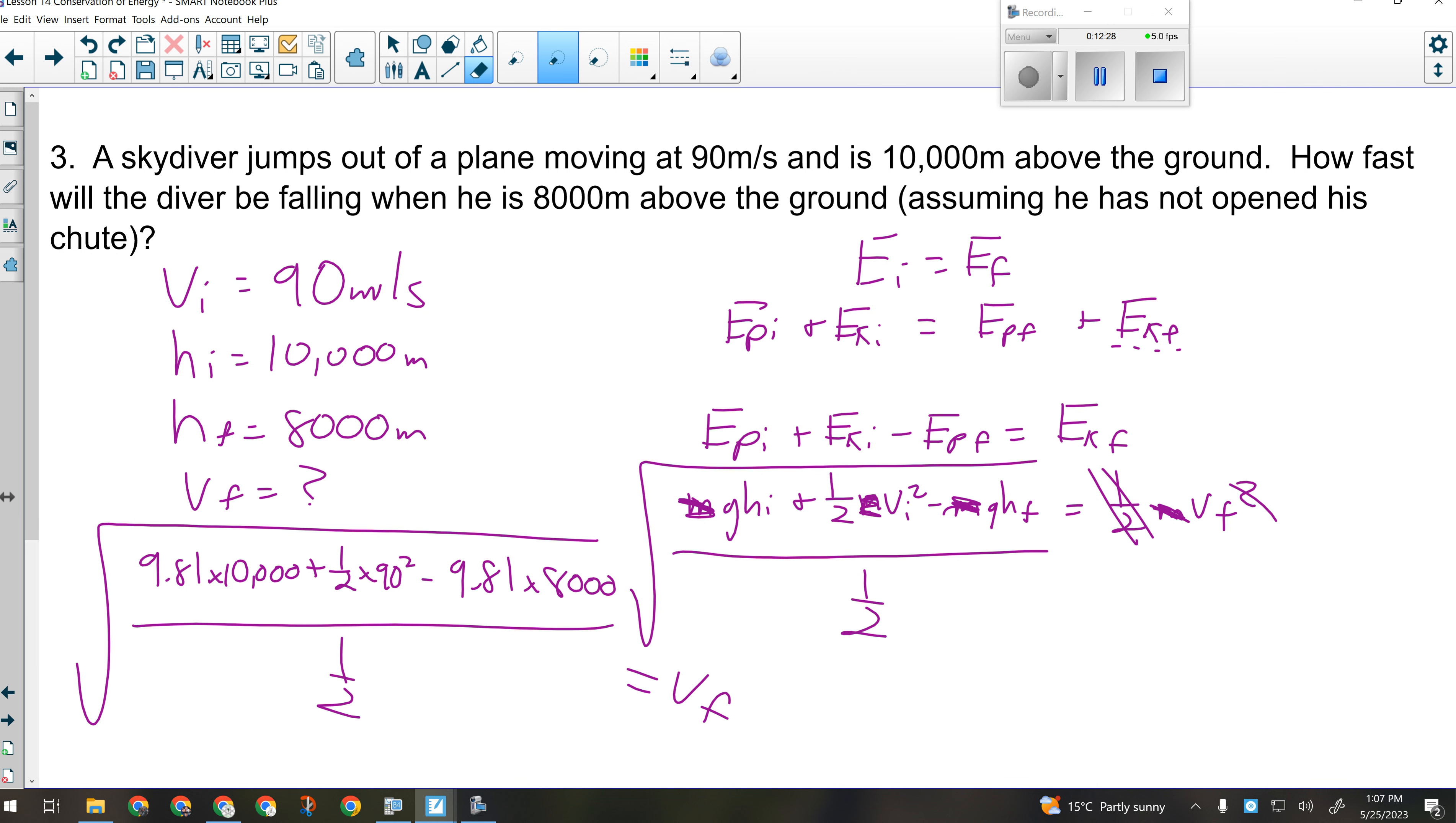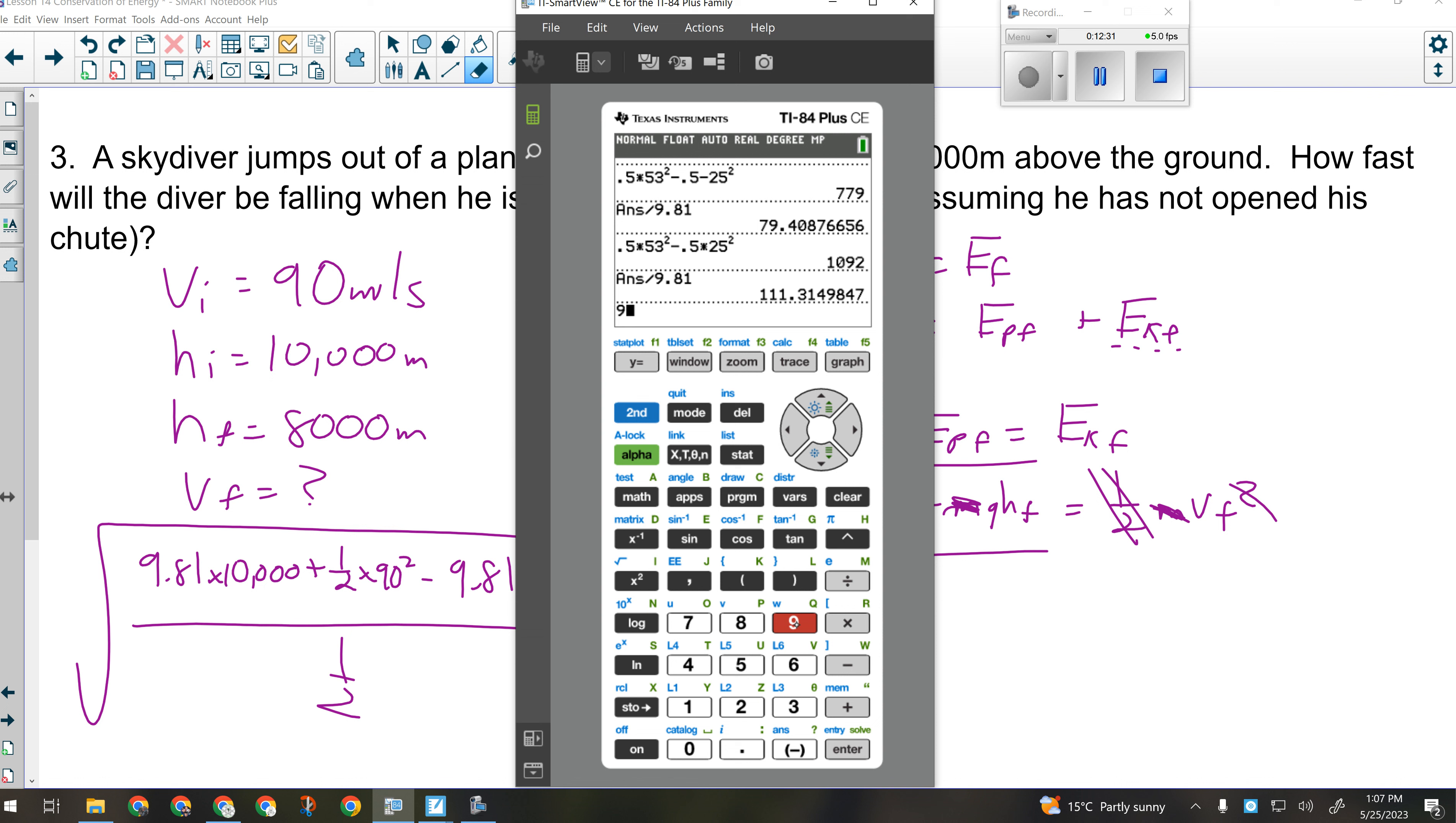So when we're looking at this with the numbers plugged in, we have the square root of 9.81 times 10,000 plus one half times 90 squared minus 9.81 times 8,000, the final height, divided by one half, all square rooted, will give us our final speed. So in our calculators, do it one piece at a time. 9.81 times 10,000 plus 0.5 times 90 squared minus 9.81 times 8,000. And now I'm going to divide that by one half. And then I'm going to square root that.